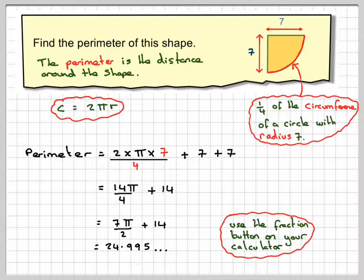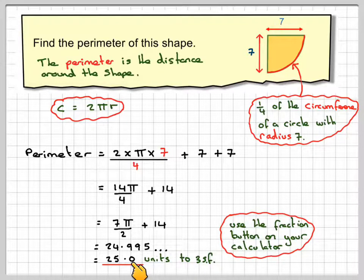Now that's three significant figures. That nine will make that 10, so that'll make that 25. So to three significant figures it'll be 25.0 units. It is important that you write that point zero in, in this case.